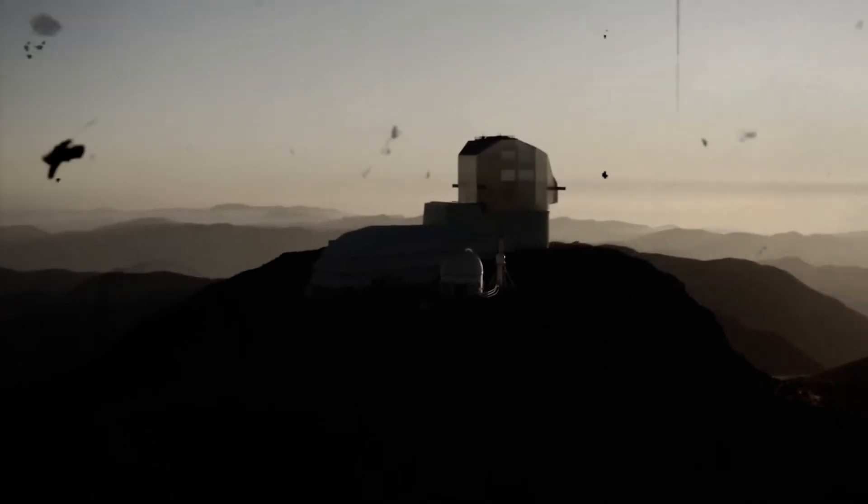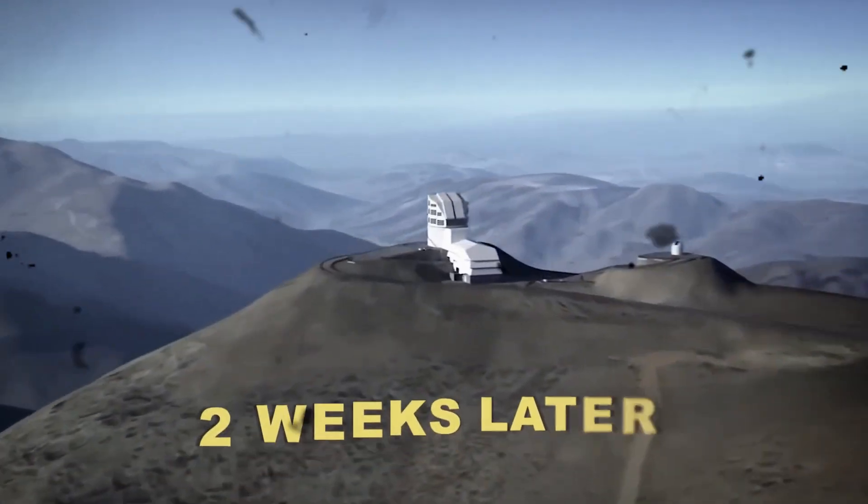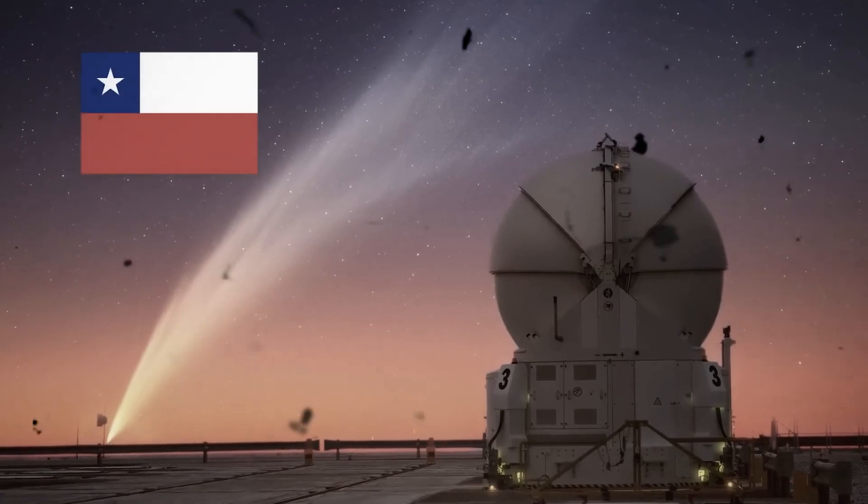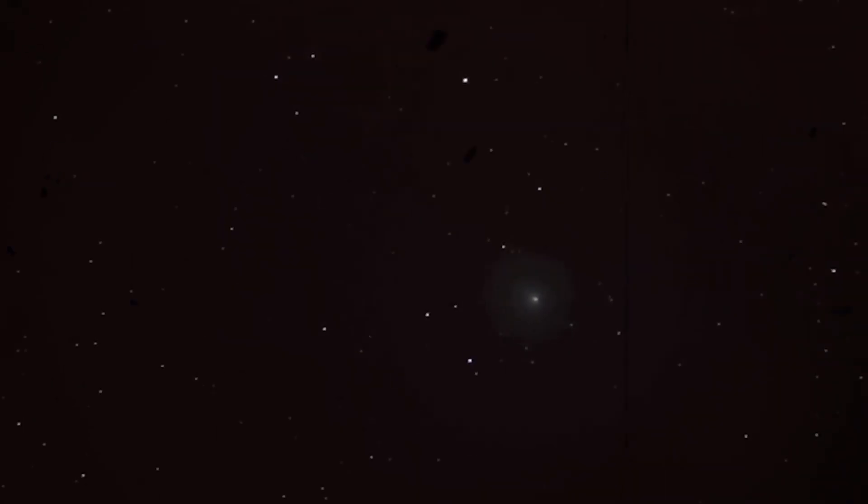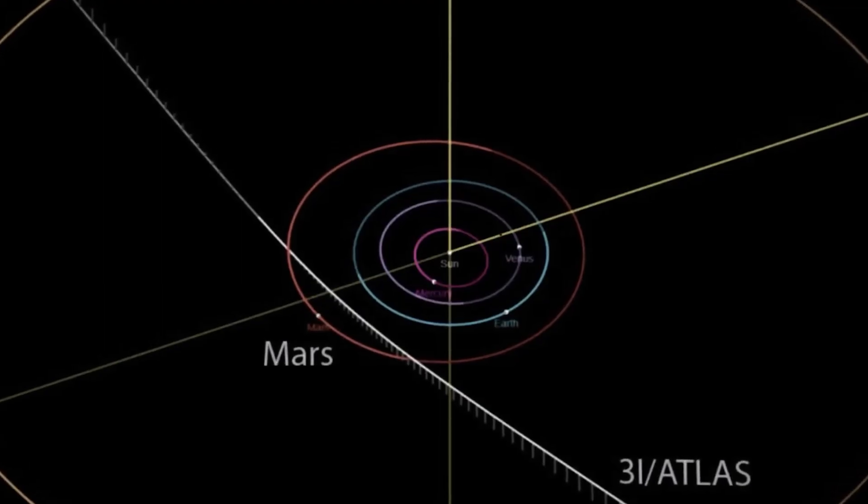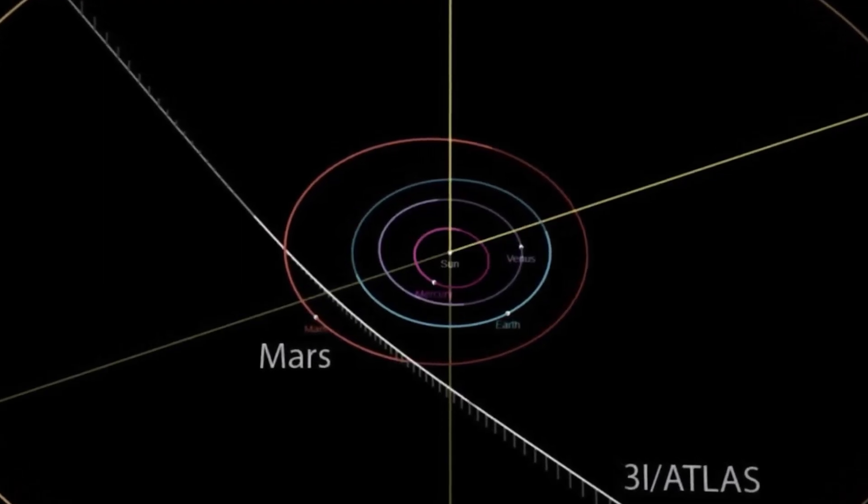Two weeks passed. On July 1st, NASA's Atlas Telescope in Chile independently detected the identical anomalous streak. This time, they recognized it wasn't from our solar neighborhood. NASA officially designated it an interstellar object.